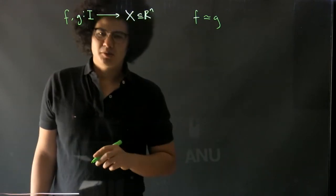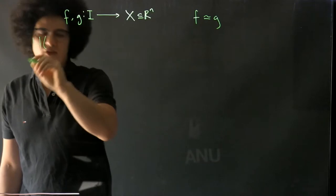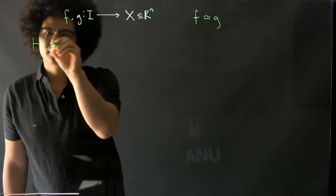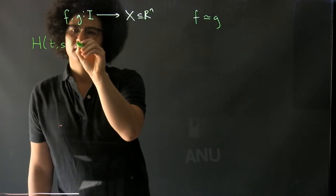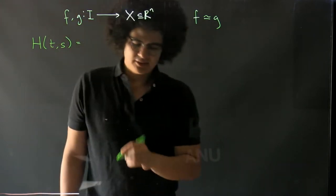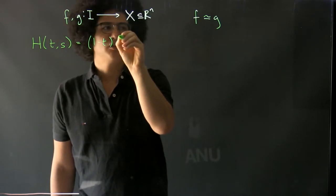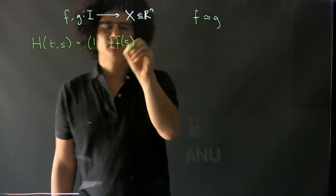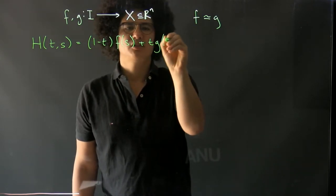We want to write down what a homotopy between these might look like. We'll have H(t,s) and set that equal to (1-t)f(s) + tg(s).